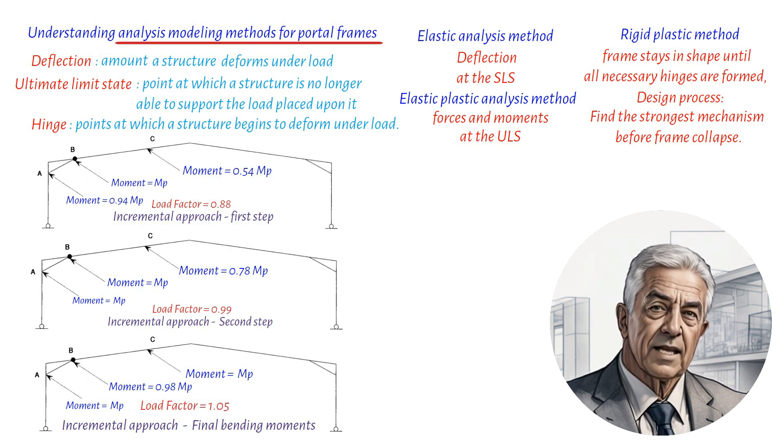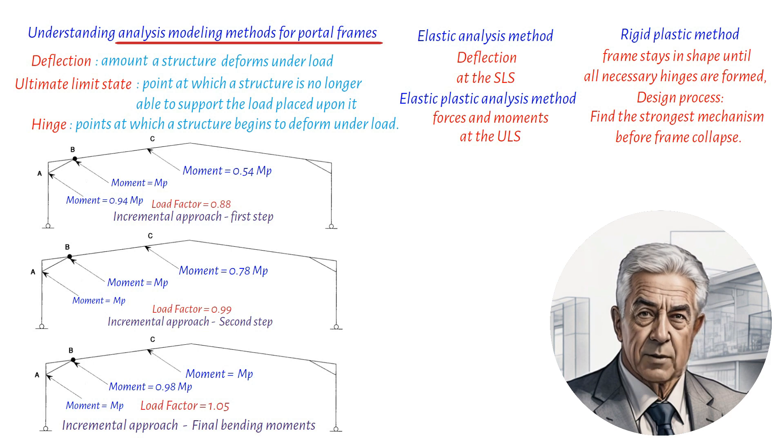The first step is to carry out an elastic analysis at the full design loading. It is then necessary to investigate the bending moment diagram around the frame and determine the point or node at which the ratio of the applied moment to the plastic moment of resistance of the section is the greatest. This is the position of the first hinge formation.